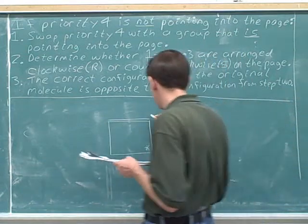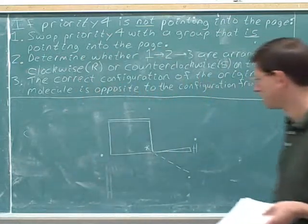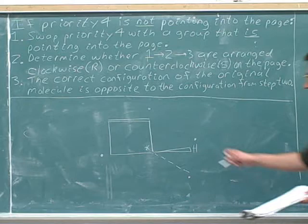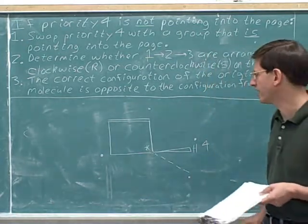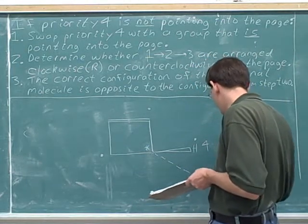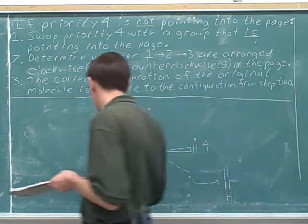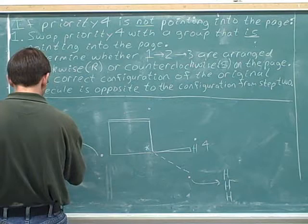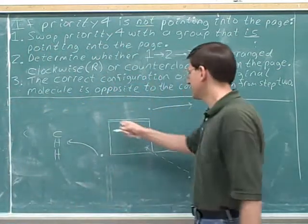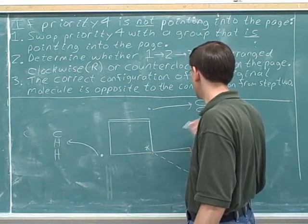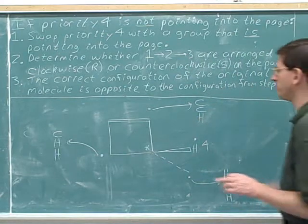Let's put dots in for the attached atoms. Clearly the hydrogen is the number four priority, and then we have three carbons that are all tied. This carbon is attached to three hidden hydrogens. This carbon is attached to a carbon and then two hidden hydrogens. And this carbon is double bonded to a carbon, which counts as two separate carbons, and then there must be one hidden hydrogen.